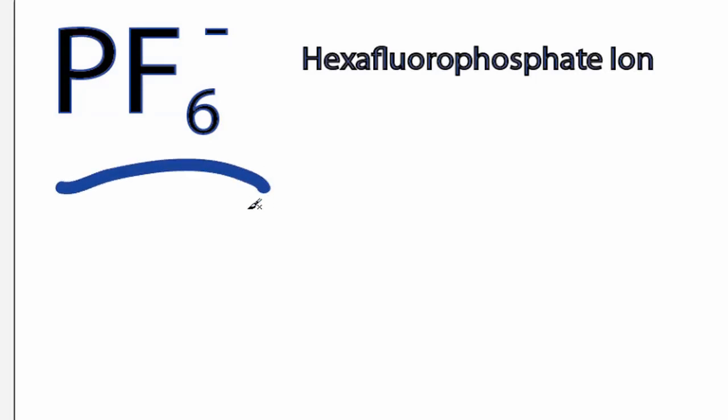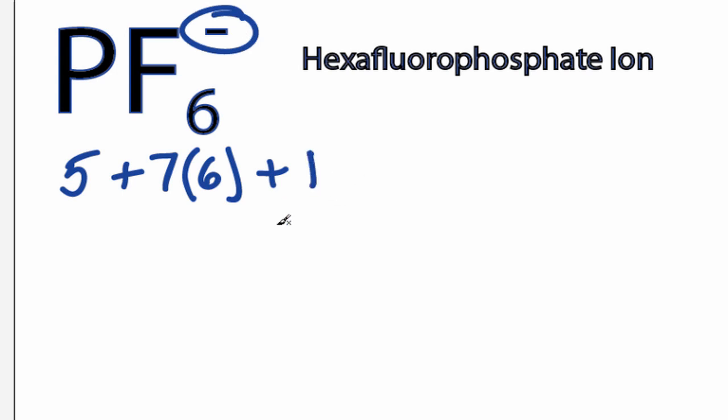This is the PF6 minus Lewis structure. Phosphorus has 5 valence electrons, fluorine has 7, we have 6 fluorines, and we need to add in this valence electron up here for a total of 48 valence electrons.